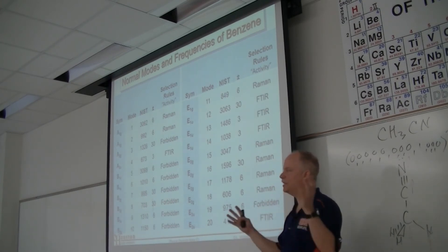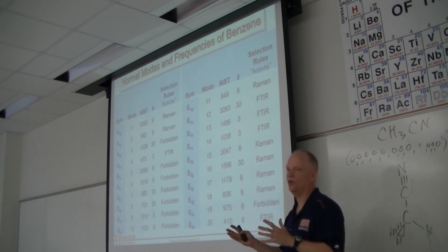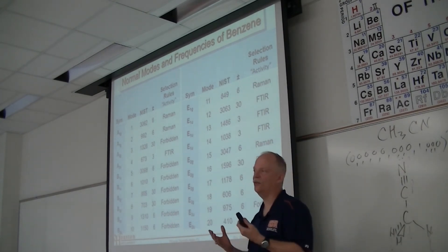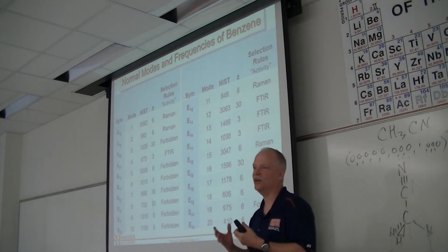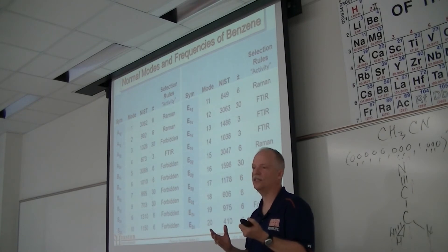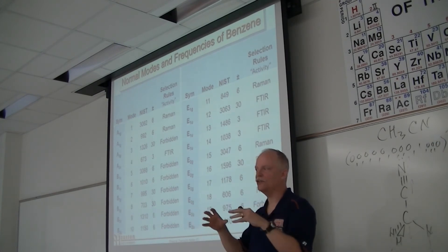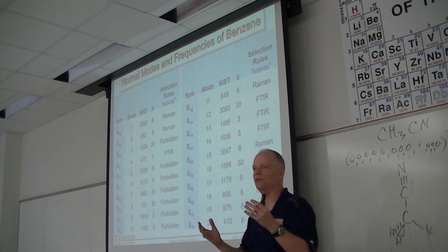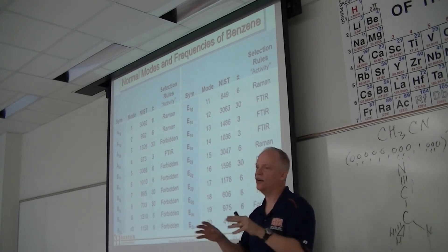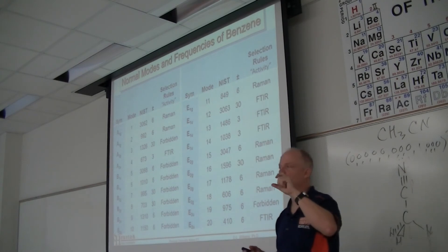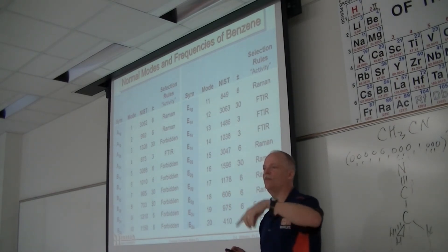To know those forbidden modes exist, you'd have to measure something like the heat capacity — knowing you can store energy in certain motions of the molecule, it has a higher heat capacity than expected, meaning there are levels that can be populated but can't be measured directly with light. You might get evidence of their existence through combination bands.